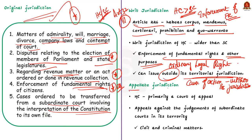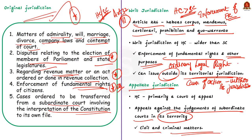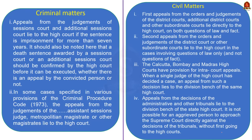A High Court is primarily a court of appeal. It hears appeals against judgments of subordinate courts functioning within its territorial jurisdiction. It has appellate jurisdiction in both civil and criminal matters, making its appellate jurisdiction wider than its original jurisdiction. Details about appeals in civil and criminal matters are provided for reference.